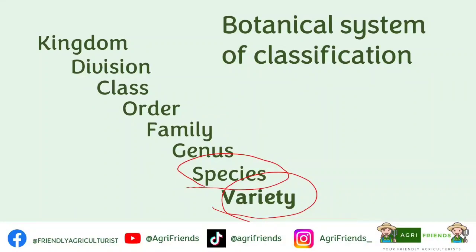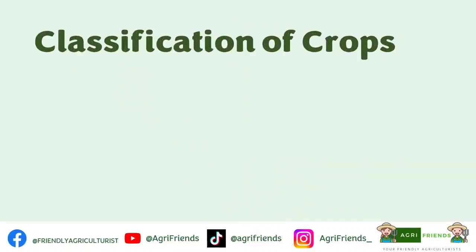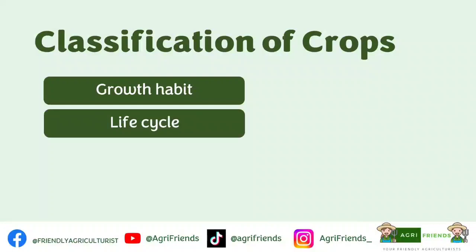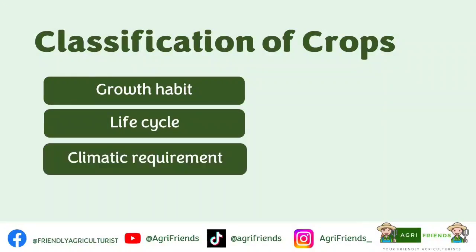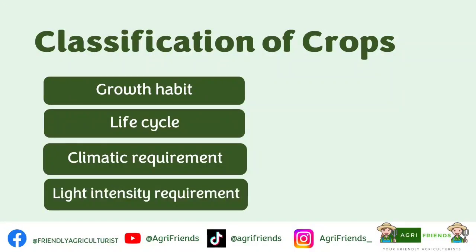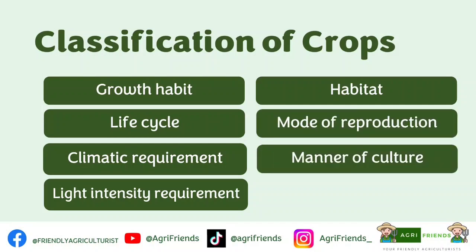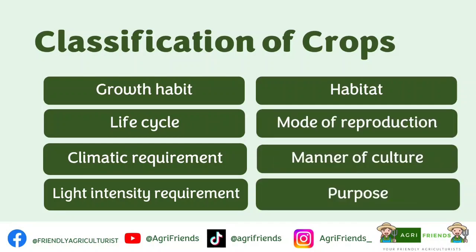What are the bases of classification of crops? We have: growth habit, life cycle, climatic requirement, light intensity requirement, habitat, mode of reproduction, manner of culture, and purpose.